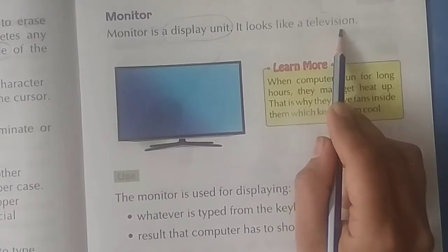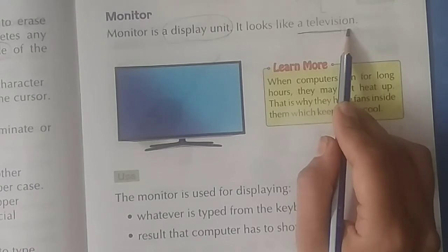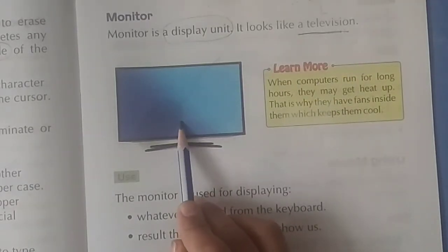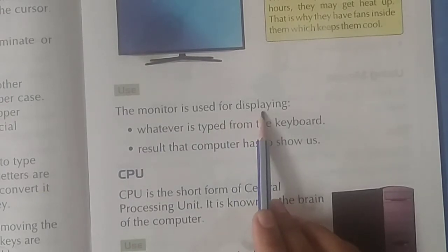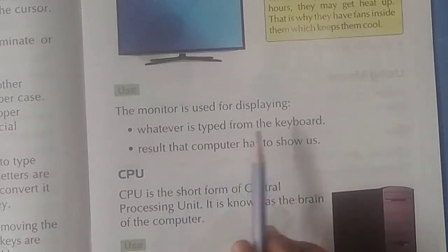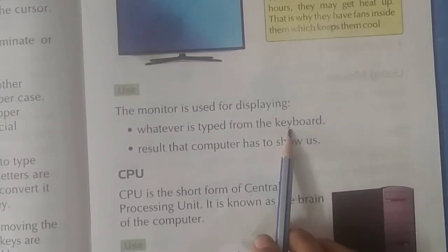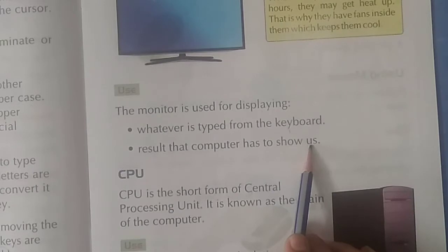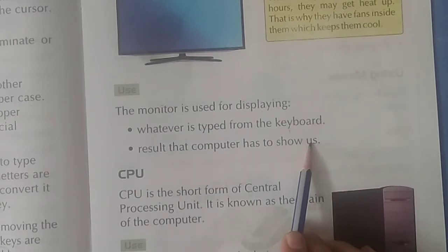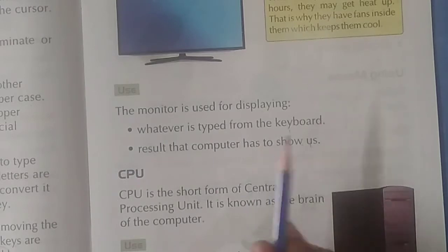It looks like a television — like a TV. That is our monitor. The monitor is used for displaying. Whatever things we need to see, the monitor is used for that. Whatever is typed from the keyboard — what we typed on the keyboard — where will we see it? On the computer's display, meaning on the monitor. The result that the computer has to show us — whatever you searched, whatever you typed, whatever you want to see — all of that you will see on the computer's screen, that is, the monitor, which looks like a TV.